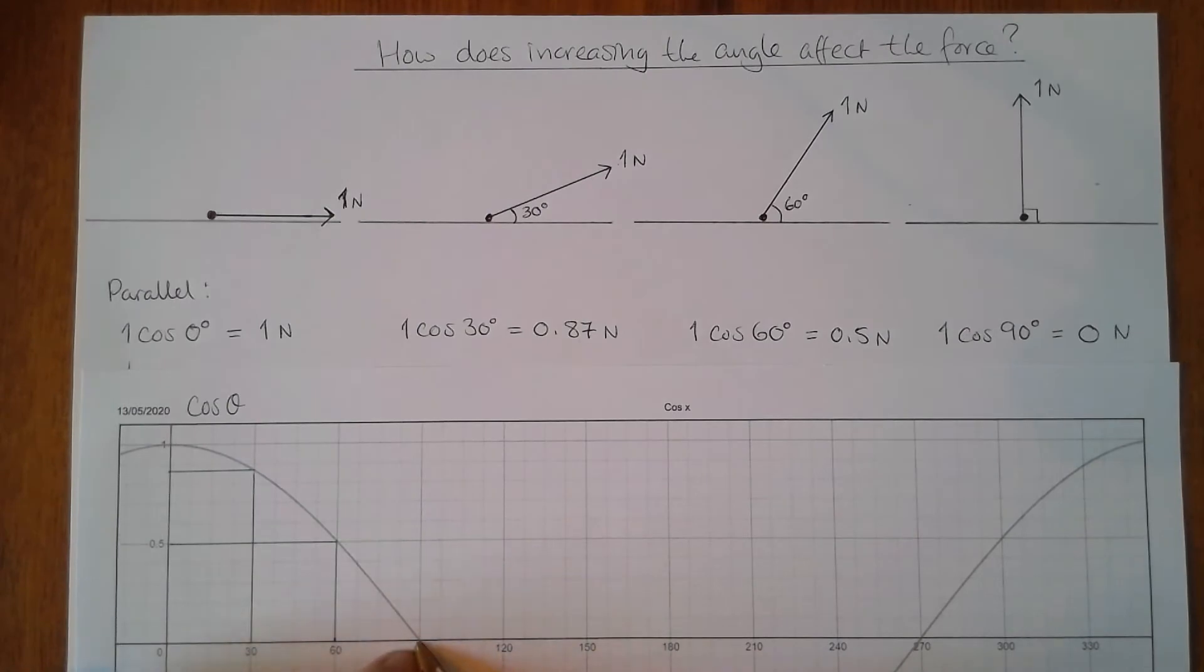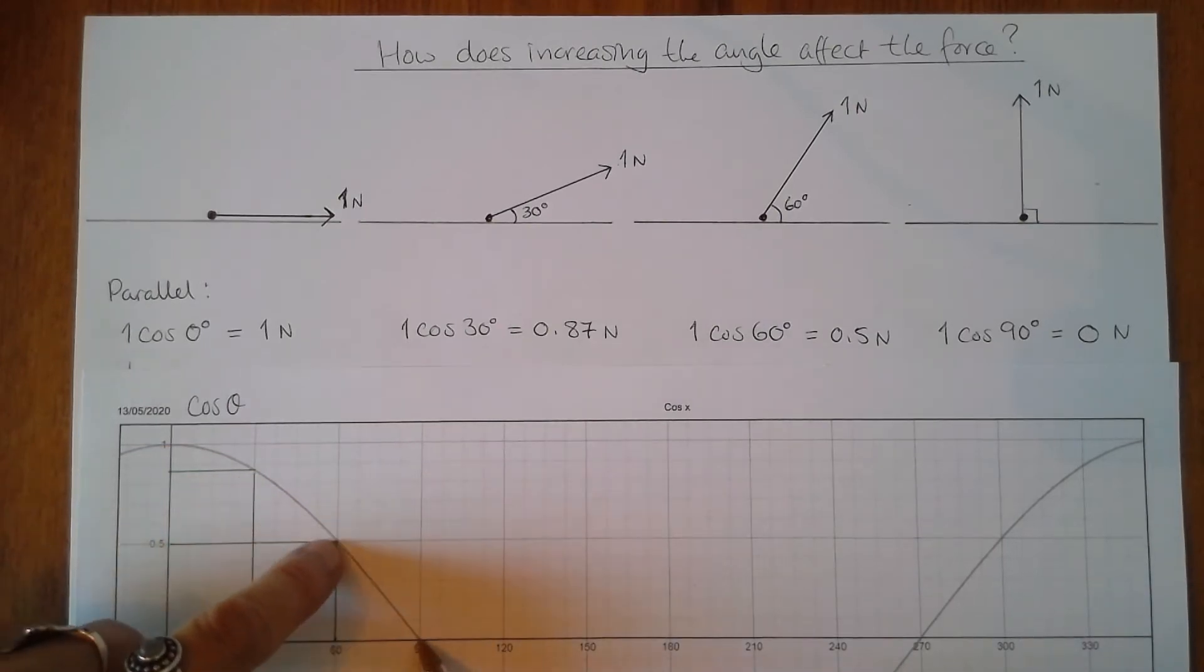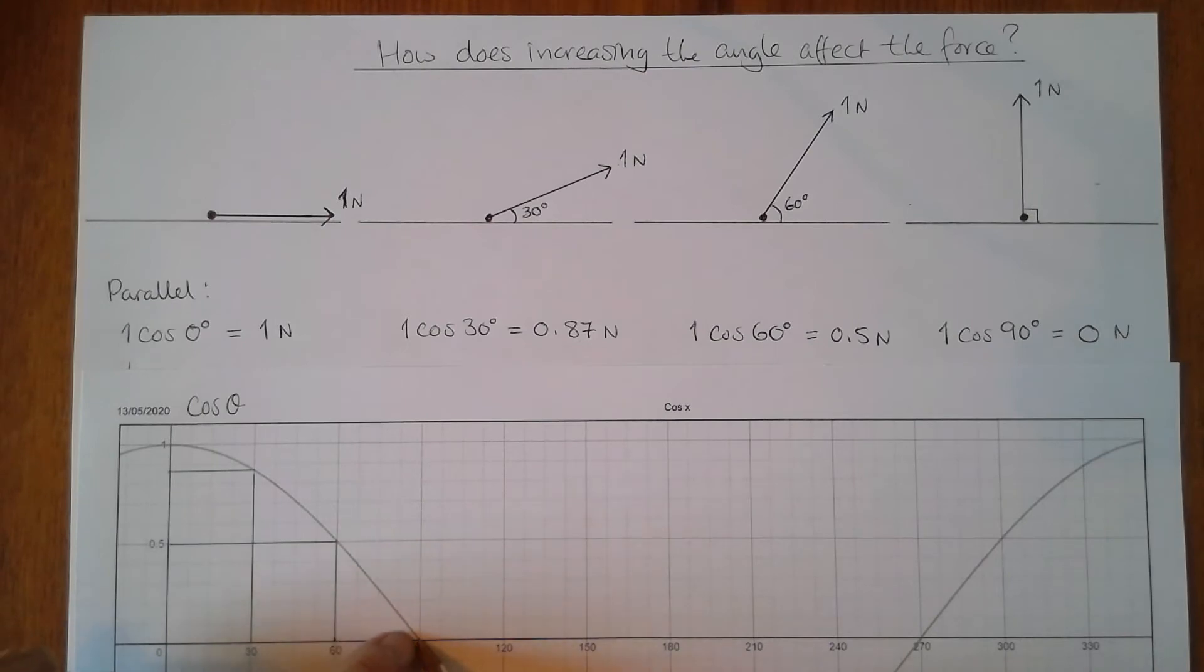So you can see that as the angle increases up to 90 degrees, the value decreases, and so the amount of the force acting parallel to the surface decreases. The opposite happens when we look at the perpendicular component because we use sine theta this time.